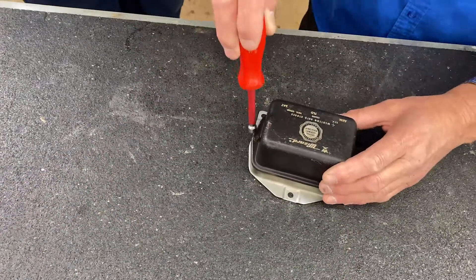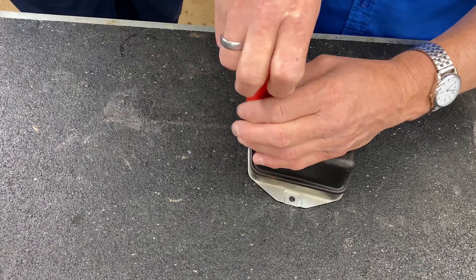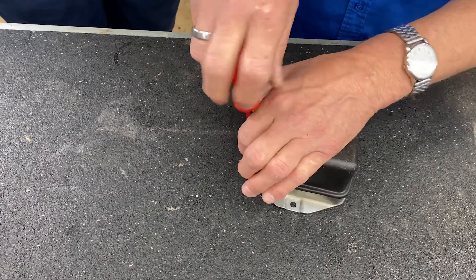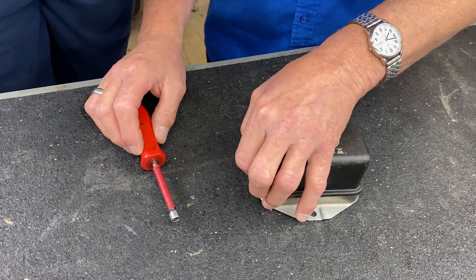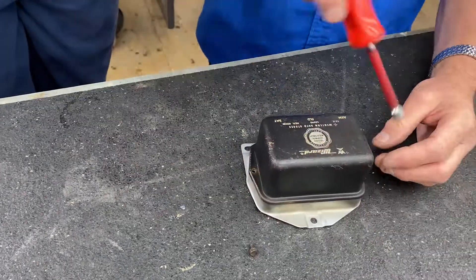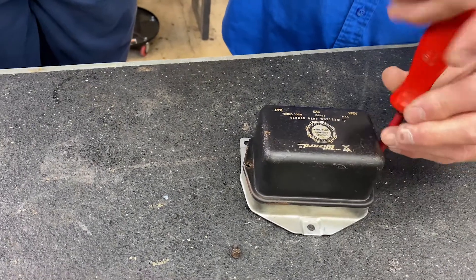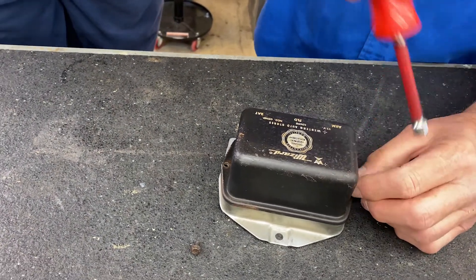Let's see what we got inside here. A customer sent us this voltage regulator because he's got an older Falcon that he's been struggling with buying voltage regulators to get them to work. So he sent us this to convert it to electronic.